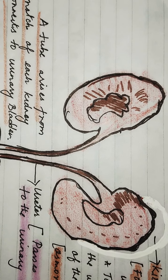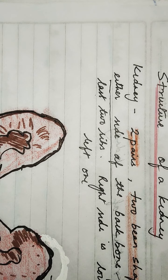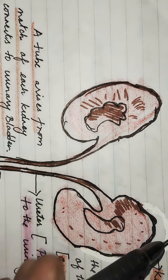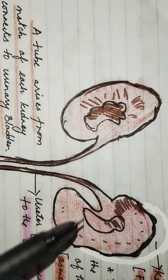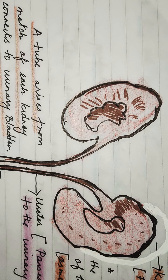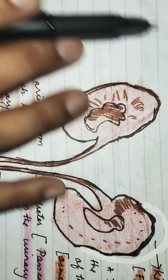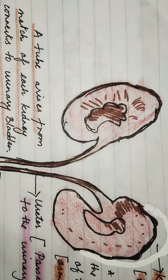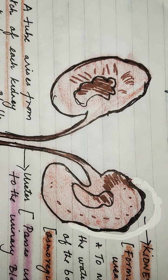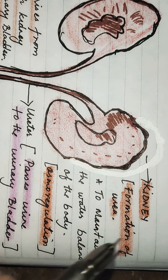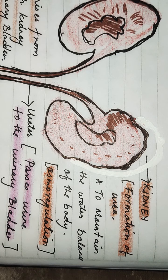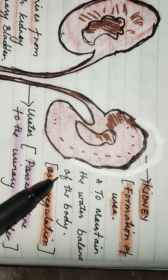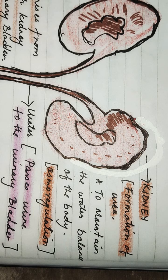Good morning class. Today we are going to learn about the structure of a kidney. We have two kidneys and they are bean-shaped structures located either side of the backbone, protected by the last two ribs. The right side is lower than the left one. The main function of the kidney is it helps in the formation of urea and also helps to maintain the water balance of the body, and the process is known as osmoregulation.